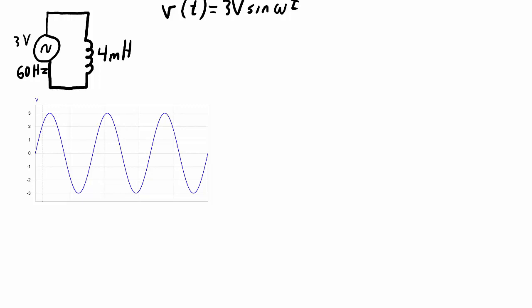The impedance of this inductor is equal to the reactance with a phase angle of 90 degrees, which equals ωL∠90°. Omega being 2π times 60 times 4 millihenrys gives me 1.51 ohms with a phase angle of 90 degrees.